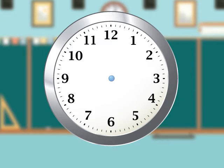Here is a blank clock face. Let's start by looking at the hour hand. It is the shorter of the two clock hands. The hour hand varies in value from 1 to 12.